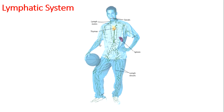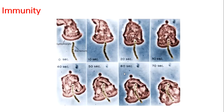A lymphocyte is a type of white blood cell made in the thymus, spleen, or bone marrow. Lymphocytes protect the body by traveling through the circulatory system and defending against infection. The lymphatic system protects your body from harmful substances and infections. Resistance to specific pathogens or disease-causing agents is called immunity. The skeletal system produces immune cells and the circulatory system transports them throughout the body.